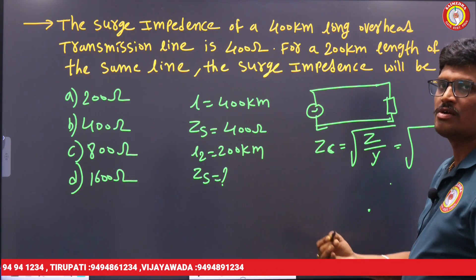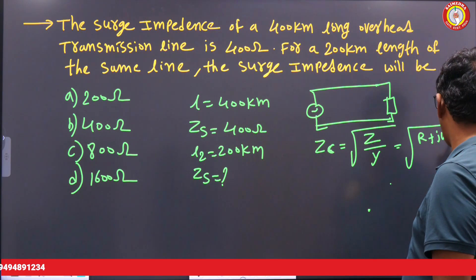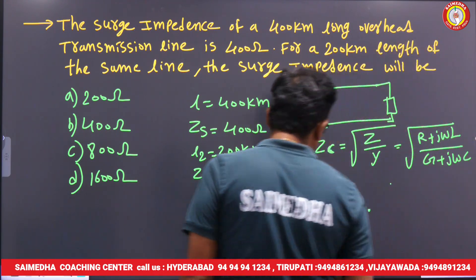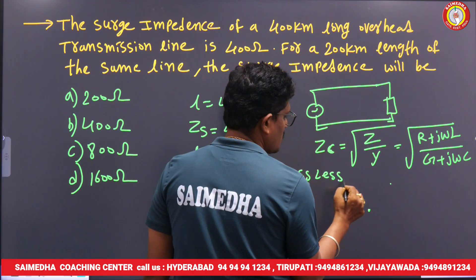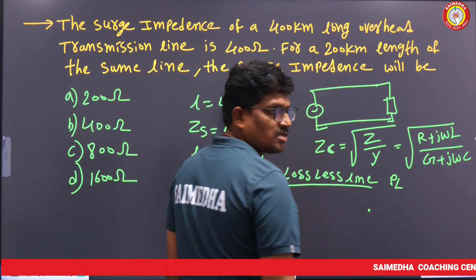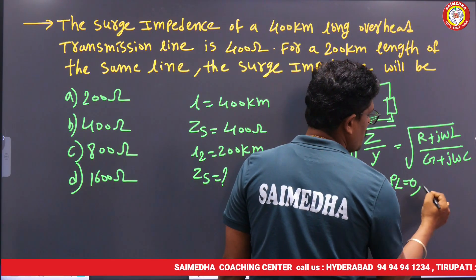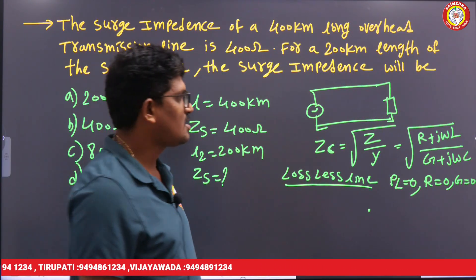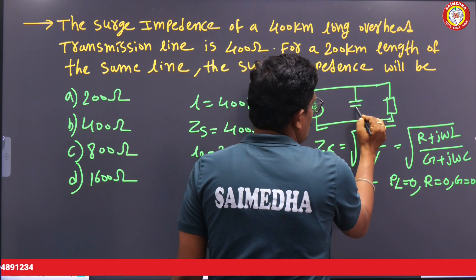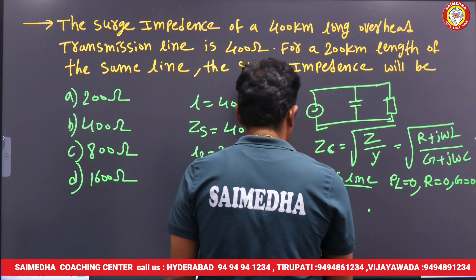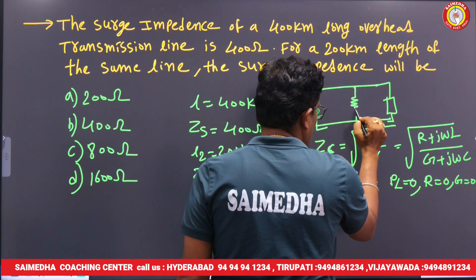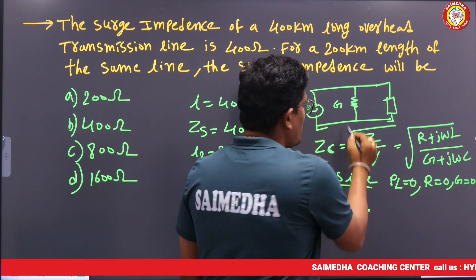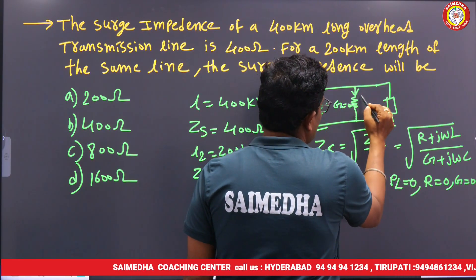We can write Z in complex form as R + jωL, and similarly Y as G + jωC. Surge impedance occurs in a lossless line. A lossless line means power loss is completely zero, which means line resistance R is zero and conductance G is also zero. Conductance occurs in parallel in the line due to leakage of insulators, represented by G.